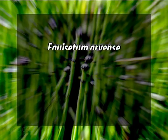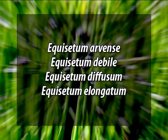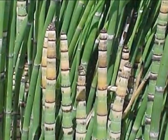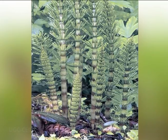Of these, Equisetum arvense, Equisetum debile, Equisetum diffusum, and Equisetum elongatum are the most common and widely distributed ones. Species of Equisetum are used as indicators for minerals in the soil, and some species accumulate gold from the soil. There is a deposition of silica on the outer walls of epidermal cells, due to which the plants become rough in texture and are used as abrasives. Silica also provides a protective covering against predators and pathogens. Some species are also used in Ayurvedic medicines as diuretics.